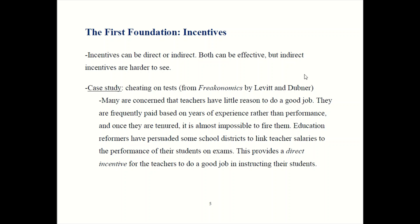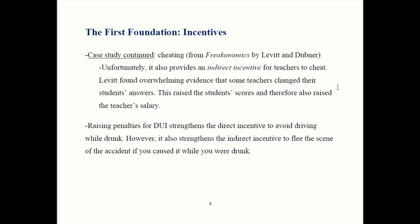This plan ended up backfiring because there's also a powerful indirect incentive at work here as well, which the policy makers who designed this reform did not anticipate. What teachers were not told — but figured out on their own — was that if they were to cheat, if they were to change their students' answers to make them do better on the exam and falsify test scores, that's another way to get a pay raise.